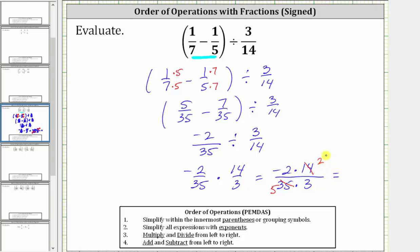In the numerator, we have -2 times 2, which is -4. In the denominator, we have 5 times 3, which is 15.